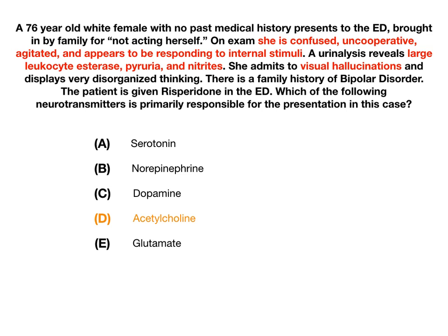Let me explain why the other answer choices are incorrect. Serotonin is implicated in depression, along with norepinephrine, but mostly serotonin. Norepinephrine and acetylcholine together are implicated in dementia. Dopamine is your primary psychotic disorders — dopamine is involved in hallucinations, disorganized thinking, the symptoms of psychosis. Acetylcholine by itself is delirium, but with norepinephrine it's dementia. Glutamate is implicated in post-traumatic stress disorder, though that's somewhat beyond the scope here.